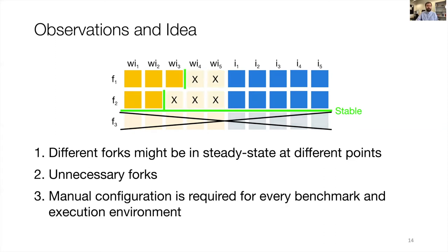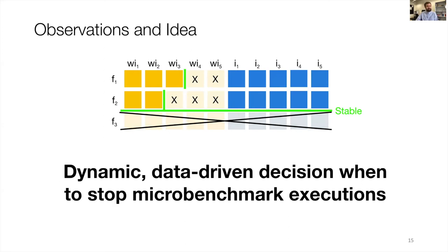Finally, a manual configuration of benchmarks is required for every benchmark because different benchmarks might be differently stable or unstable, and it also depends on where we execute these benchmarks. So the idea is to have a dynamic, data-driven way to decide when benchmarks are in a steady state and the measurement is stable, and therefore when we stop microbenchmark executions.